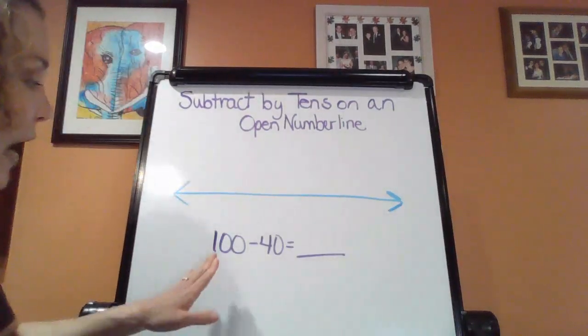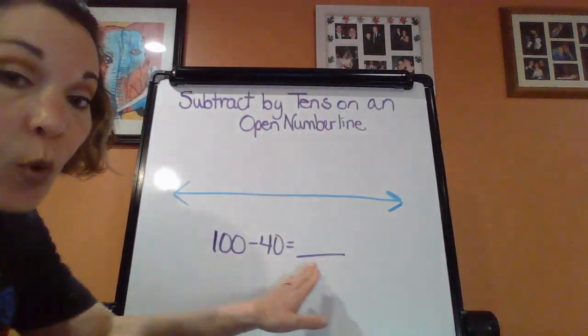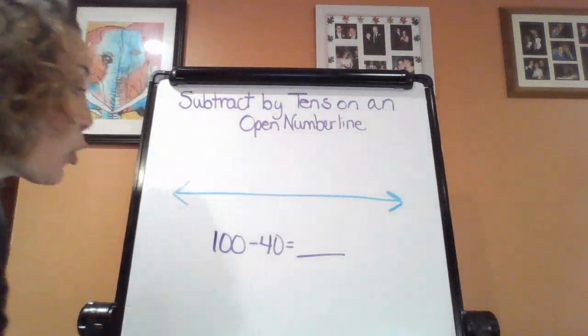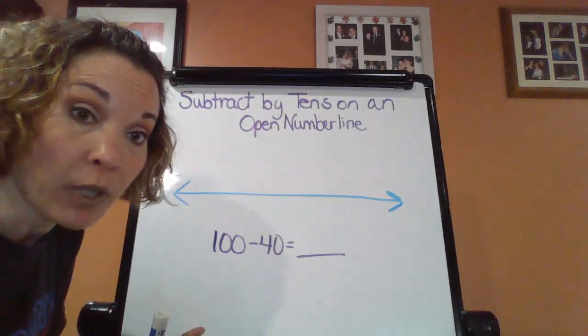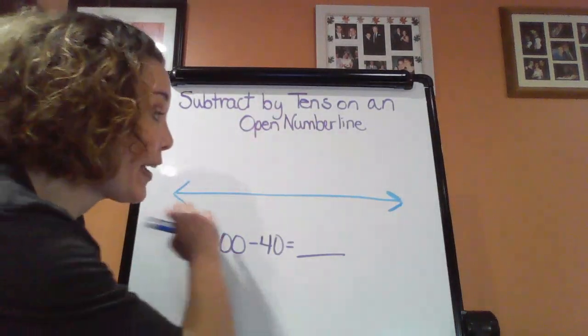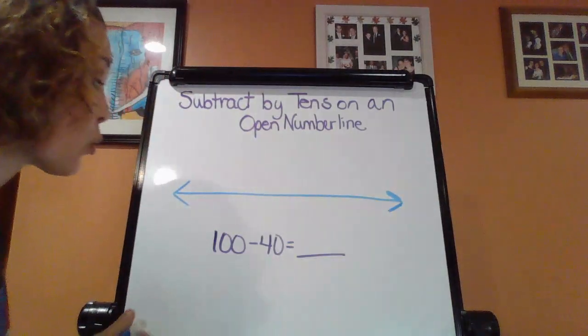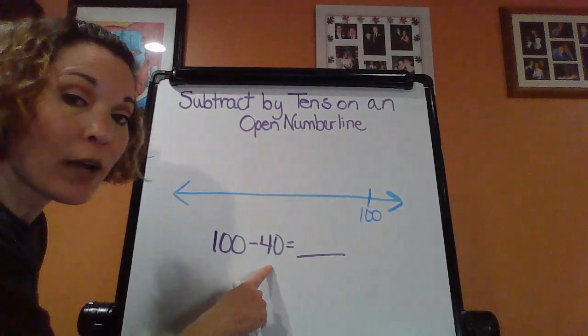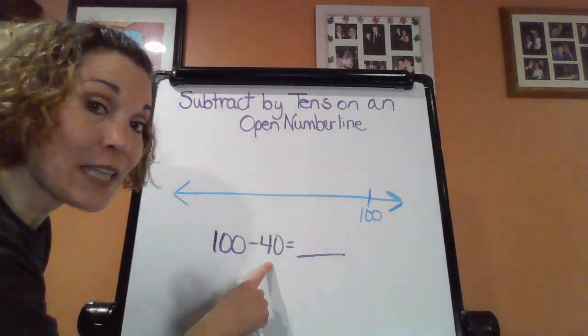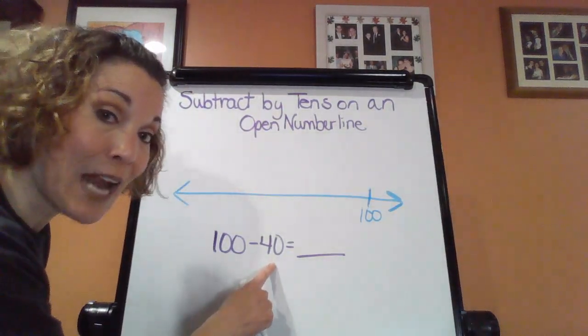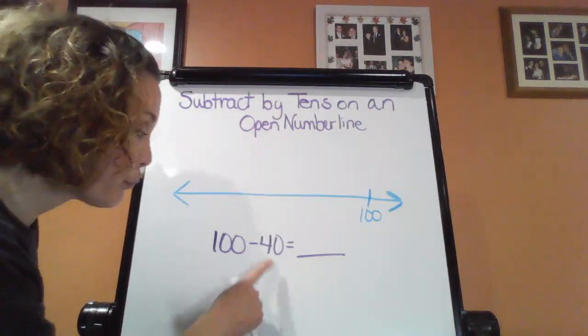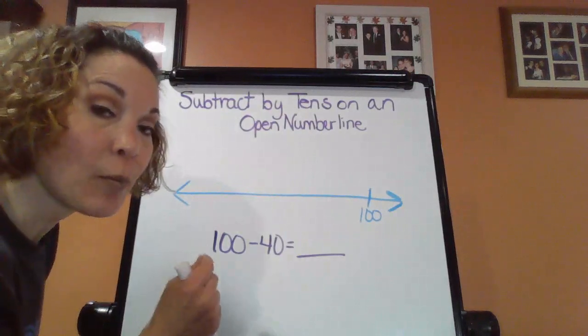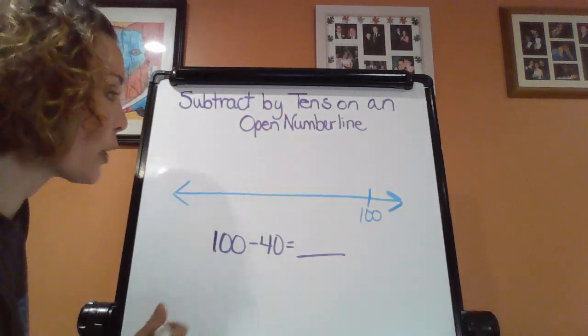Okay, we're back. So now we have 100 minus 40 equals. So wow, this is our biggest number yet. So we're looking at 100. So again, on our open number line, where do we want to start? Again, we want to start all the way to the right over here for our larger numbers. And I want to count back how many 10s. Remember, I want to break this down. So if I'm looking at the number 40, how many 10s? Four. That's telling me four hops back. So here we go.